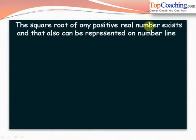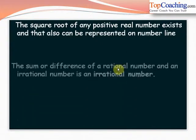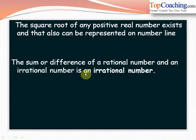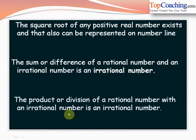The square root of any positive real number exists and can also be represented on the number line — it is itself a real number. The sum or difference of a rational number and an irrational number is always an irrational number. Similarly, the product or division of a rational number with an irrational number is always an irrational number.